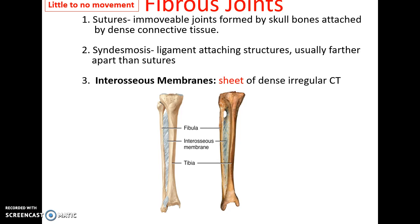Fibrous joints have little or no movement. Examples include the sutures that form immovable joints between the skull bones — dense, irregular connective tissue. There are also desmosomes, where ligaments attach certain structures together; they are a little bit further apart than in sutures but still allow relatively little movement. And then the interosseous membranes, which are sheets of dense, irregular connective tissue connecting two bones — they allow for a little bit more movement than the other two, but still relatively immobile, just holding them in place.